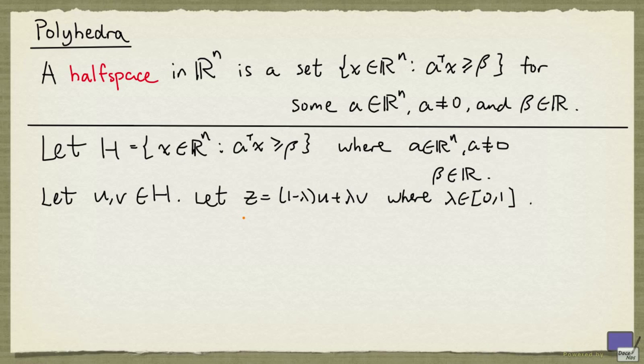To test if Z is an element of H, we simply need to check if Z satisfies this inequality. So A transpose Z is 1 minus lambda times A transpose U plus lambda times A transpose V.